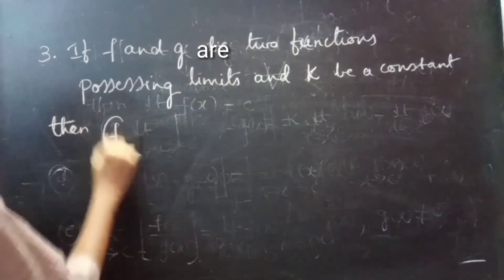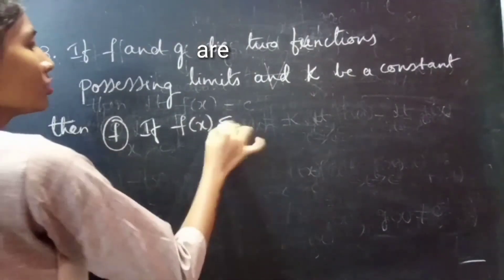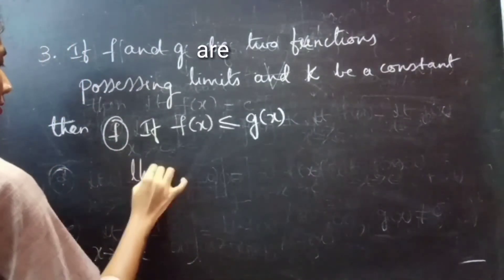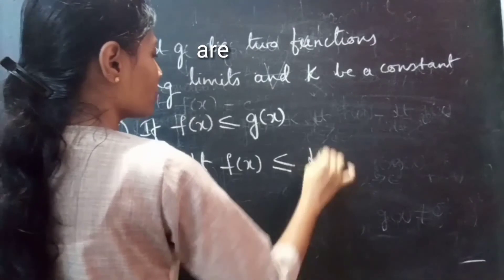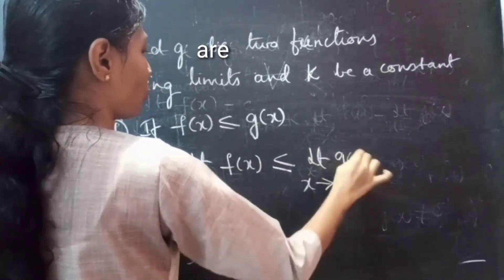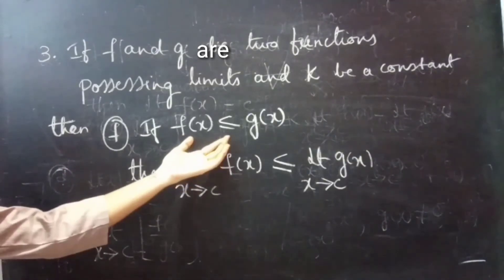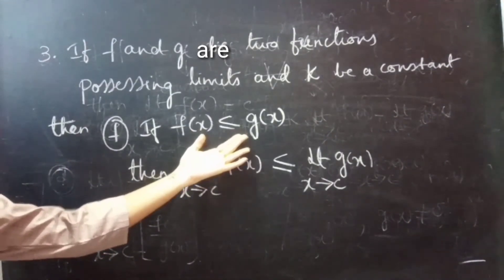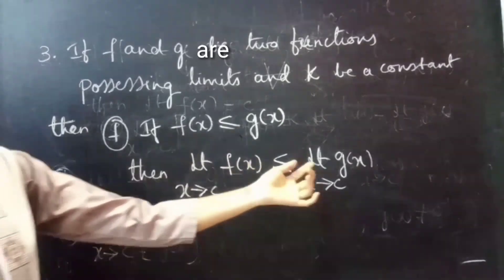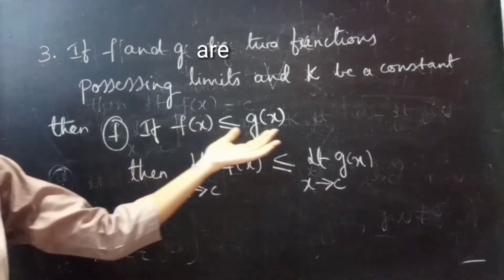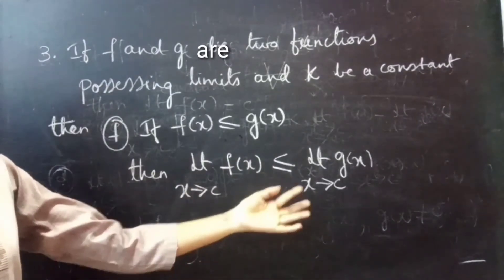Next result: if f of x is less than or equals to g of x, then limit x tends to c, f of x is less than or equals to limit x tends to c, g of x. That is, if f of x is less than or equals to g of x and you apply limits on both sides, then also you will get limit f of x is less than or equals to limit g of x.